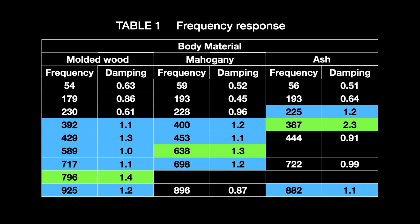Table 1 shows damping frequency characteristics, which is a measure of the level of sound loss. It is sufficient to understand that different wood species have different damping characteristics.